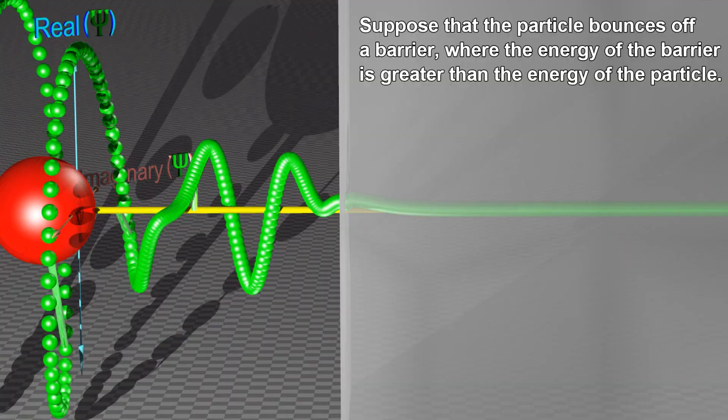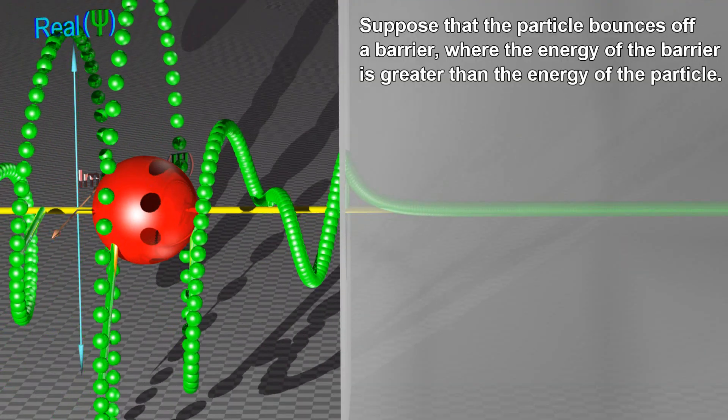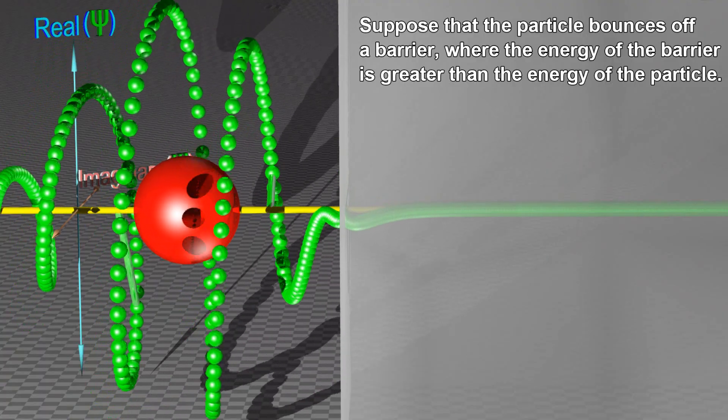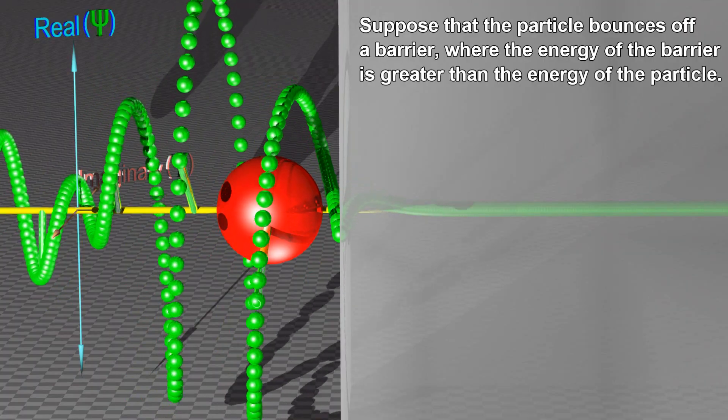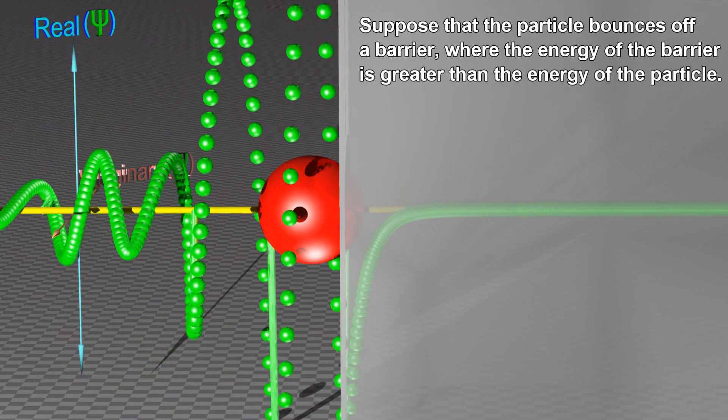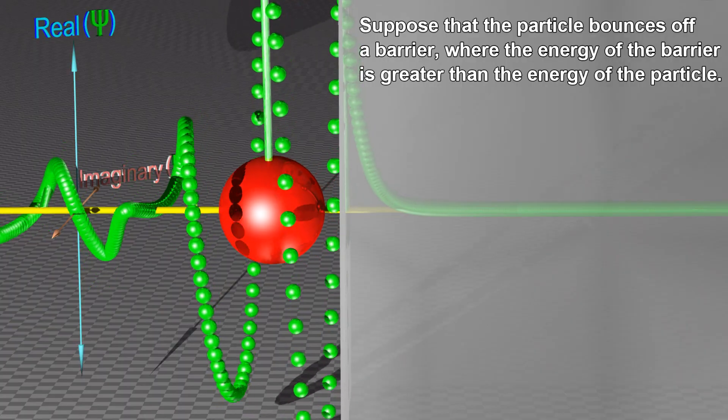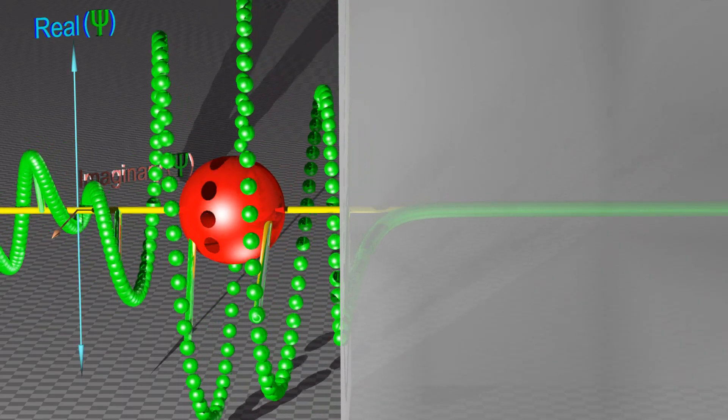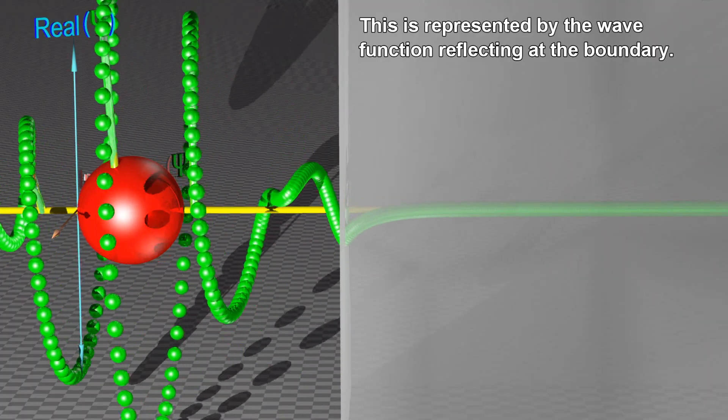Suppose that the particle bounces off a barrier, where the energy of the barrier is greater than the energy of the particle. This is represented by the wave function reflecting at the boundary.